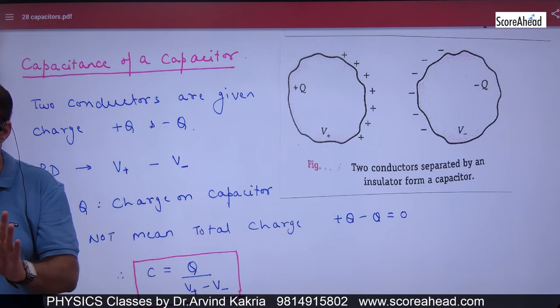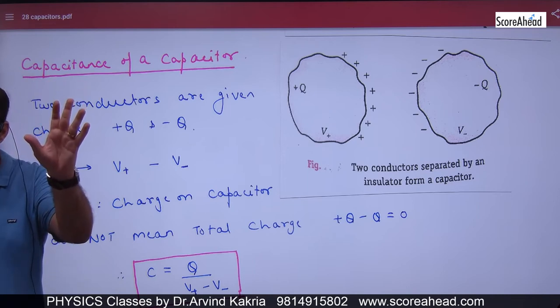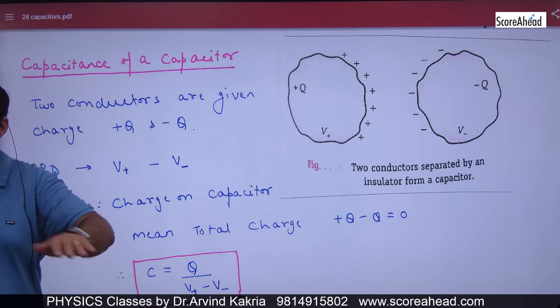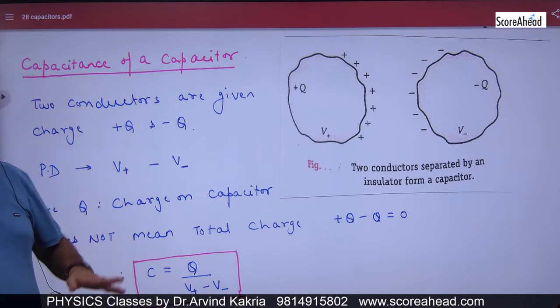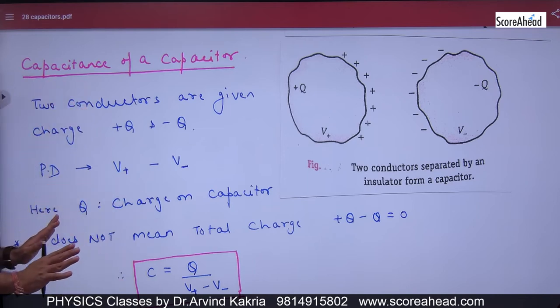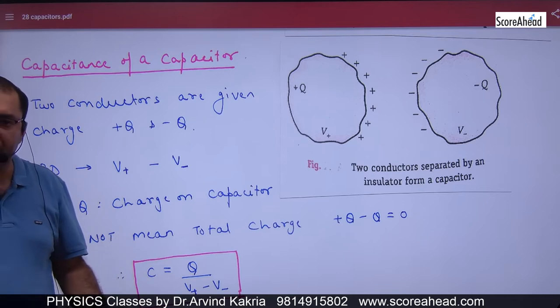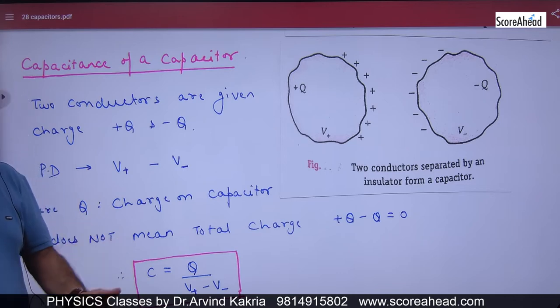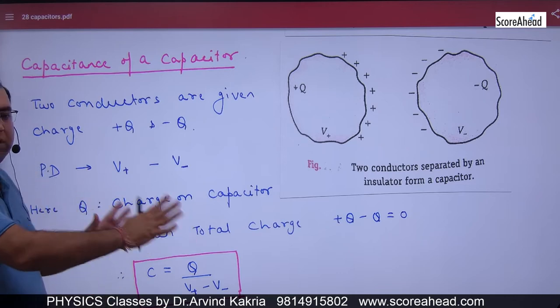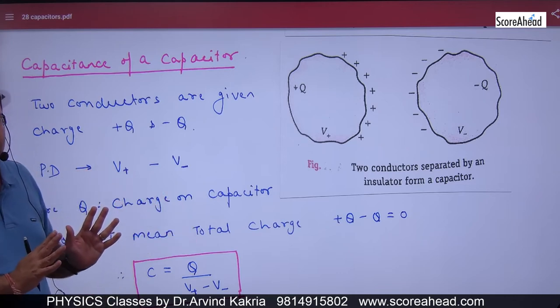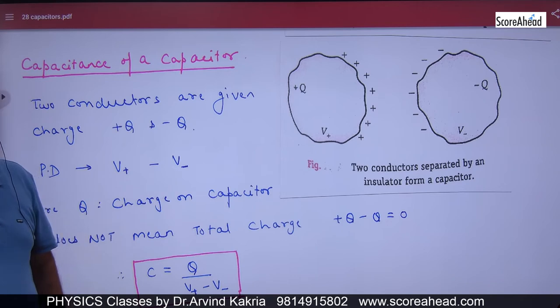Capacitance C is equal to charge Q upon potential difference. This is not a derivation — this is the general definition of how to calculate the value of capacitance. Is the point clear? Any doubt?